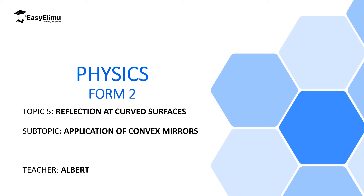Welcome to ECA LEMU Learning Simplified and welcome to this lesson. In the previous lesson we discussed some of the applications of concave mirrors. One application was as a mirror behind projector lamps, where the lamp is placed at the center of curvature. We also discussed their use as shaving mirrors and dentist mirrors, where the object is placed between the focal point and the pole, producing an upright and magnified image.